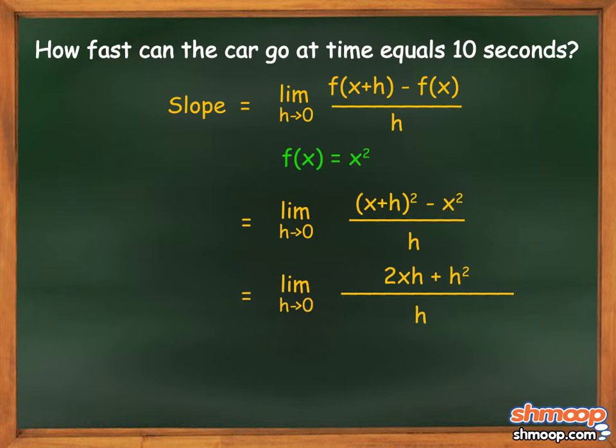We can factor an h out of the numerator to get h times (2x + h). The h's cancel on the top and bottom, and we're left with the limit as h approaches zero of (2x + h). Now we can plug in h equals zero, giving us that the slope equals 2x.